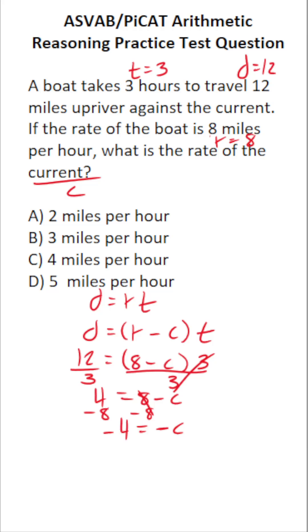Again, we want C, not negative C. So we're going to divide both sides by negative one. Negative divided by a negative becomes a positive, so this is just C. Negative divided by a negative is a positive. Four divided by one is four. So the speed or the rate of the current is C, four miles per hour.